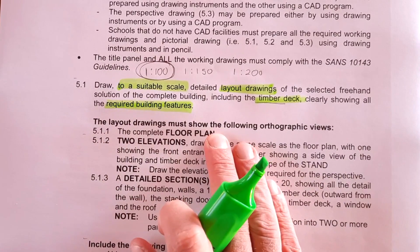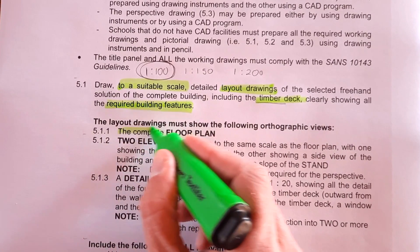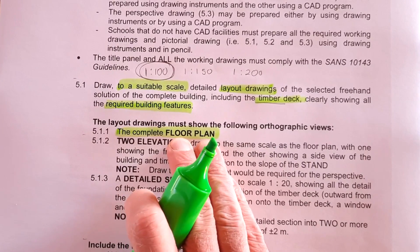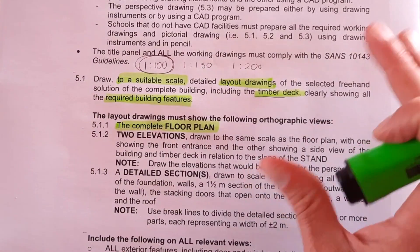The layout drawing must show the following orthographic view. The first one that's being addressed in this video is the complete floor plan. This is to such a standard that if we give the floor plan to a contractor, they must be able to go out and actually build your design.